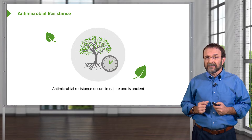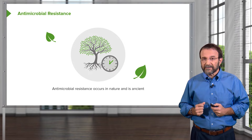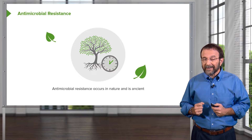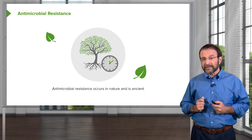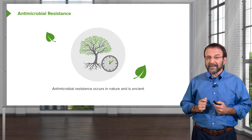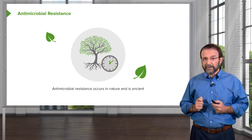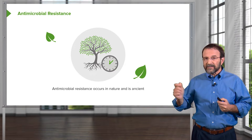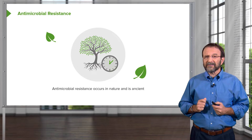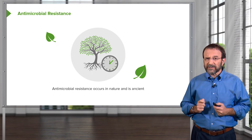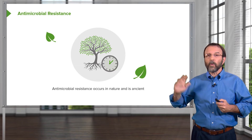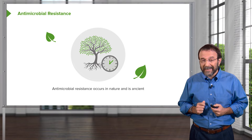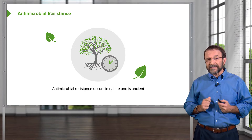Antimicrobial resistance occurs in nature, and it's ancient. Bacteria make antibiotics to compete with each other in nature, and many of those we have harnessed to use as antimicrobial treatments for infections in people. We know that genes conferring resistance have been around for thousands of years — we can find them in very old sites on Earth, and there's plenty of evidence they existed well before humans developed antimicrobial compounds.